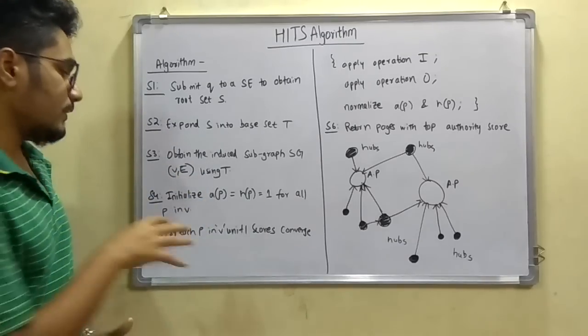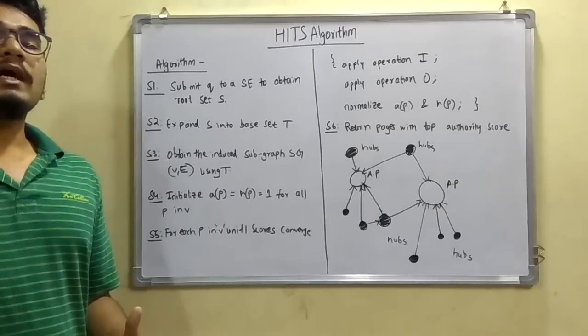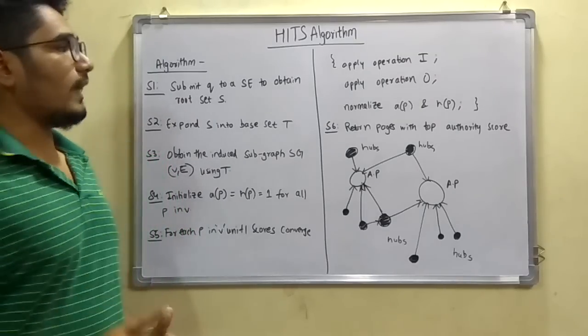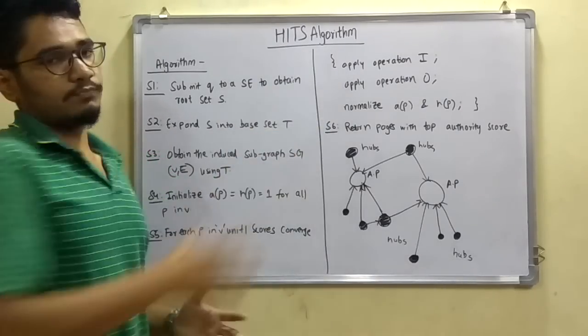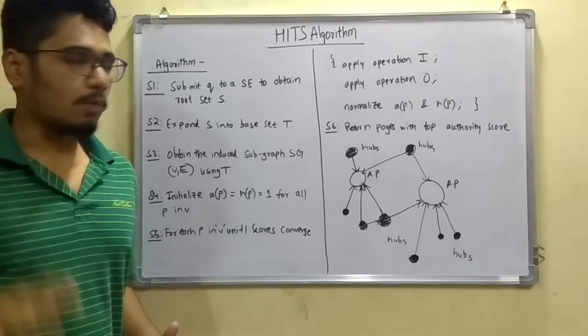Next, for each P in V until the scores converge, means until the scores come to one single particular value, we apply this set of operations. So let us see what these operations are.